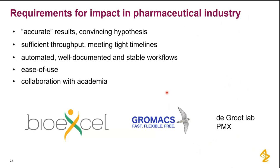To wrap up: to make the biggest impact in pharma, first we need accurate results — in quotation marks — because we're not necessarily concerned with a certain threshold like half a kcal/mol. It's often enough just to rank compounds. If I can rank 100 compounds and say take these 20 forward and there are a couple of hits, that would suffice completely. It's also good for building convincing hypotheses.